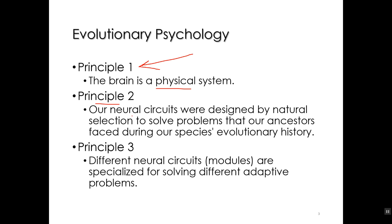Just as our body physiology was designed by natural selection to adapt to the environment, the neurocircuits that control our behavior were naturally selected based on what behaviors would allow us to best adapt. Principle number three: different neurocircuits — or modules — are specialized for solving different adaptive problems. These are the three basic principles of evolutionary psychology.